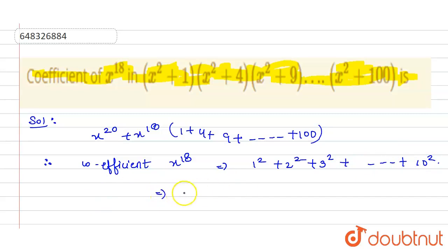So from here we know that the sum of these squares is last term that is 10 into last plus 1 that is 10 plus 1 and how I write this? This is n into n into n plus 1 into 2n plus 1 by 6. So, this will be equals to 10 into 2 plus 1 divided by 6.